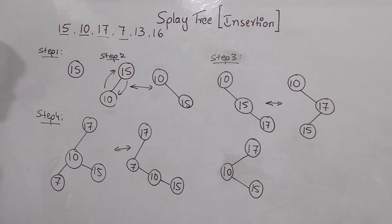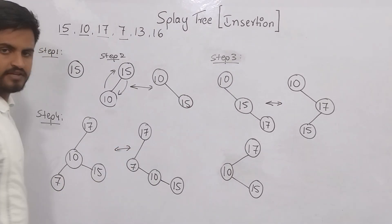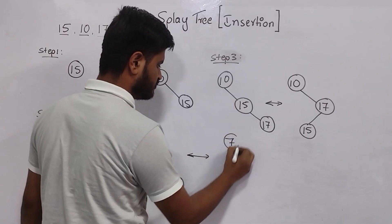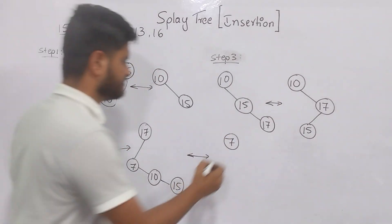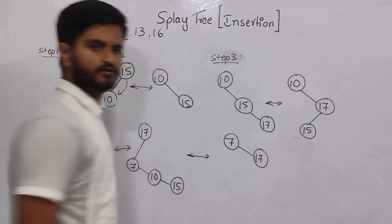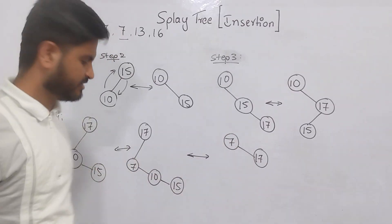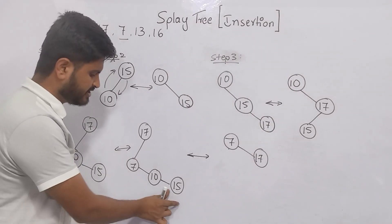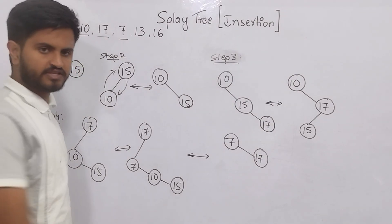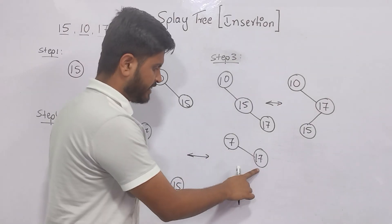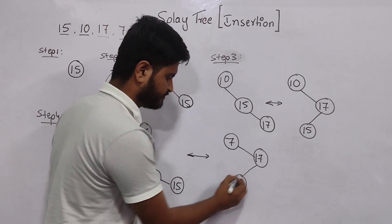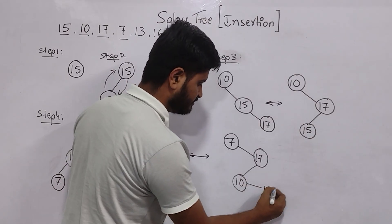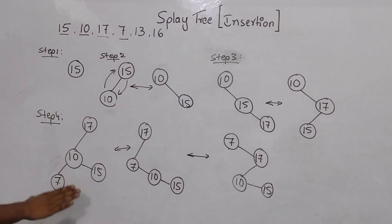Now 7 is here and I must make it the root. I exchange 7 and 17, so 7 goes to the top. 17 is greater than 7, so it moves to the right. There is a direct connection to change on the right. We are left with 10 and 15 — choose parent first, then child. 10 is greater than 7 and less than 17, so it comes here. 15 is less than 17 but greater than 10, so it comes here. Step 4 — inserting 7 — is complete.